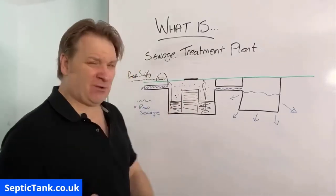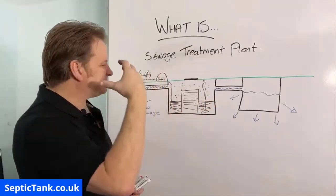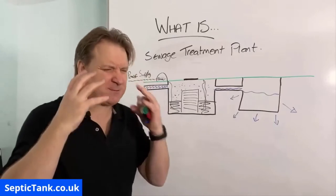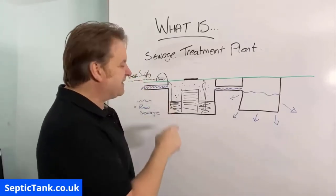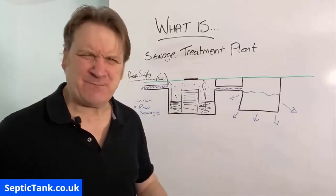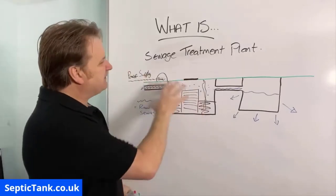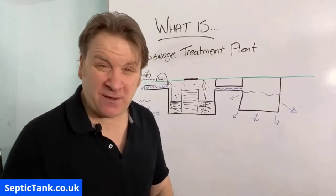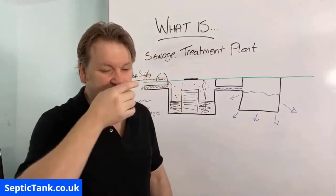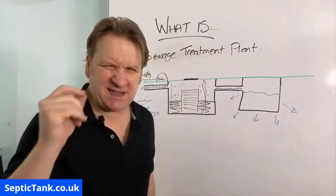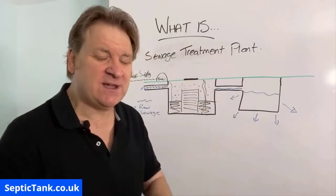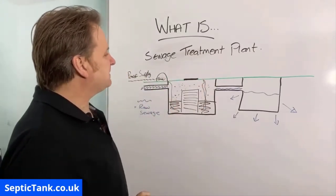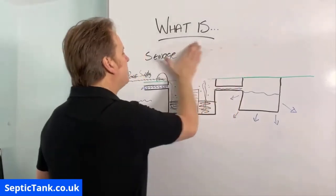That's the difference between a sewage treatment plant and a septic tank. With a treatment plant there are a lot more moving parts — compressors, motors, cogs, bearings, pulleys, shafts — and electric and water just don't mix. Typically a sewage treatment plant only has a 12-month warranty, and unless you get it serviced every year by an approved contractor the warranty is null and void.